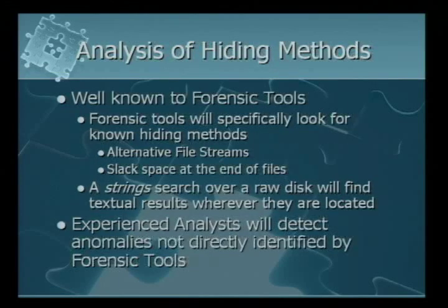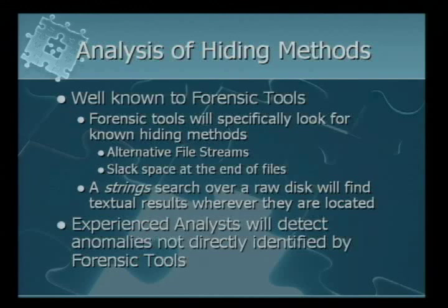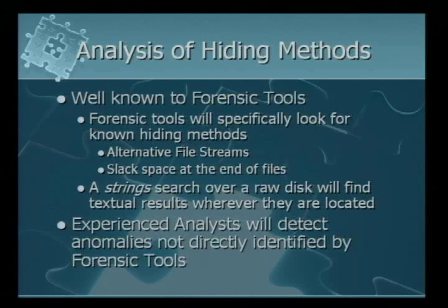Forensic tools know about many of these methods. They know about alternate file streams and will flag the data, showing it as a separate file. Slack space at the end of files is also flagged. If you do a strings or signature search across a whole hard drive, you'll find the data if you know what to look for, no matter where it is. Encryption and obfuscation help, but even our hiding methods can be defeated if someone knows exactly what to look for. Experienced analysts will find things beyond what tools give them, given enough time and money.